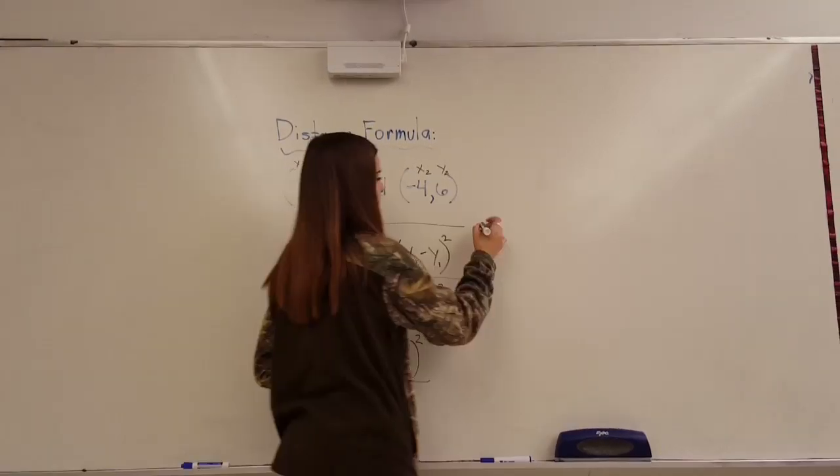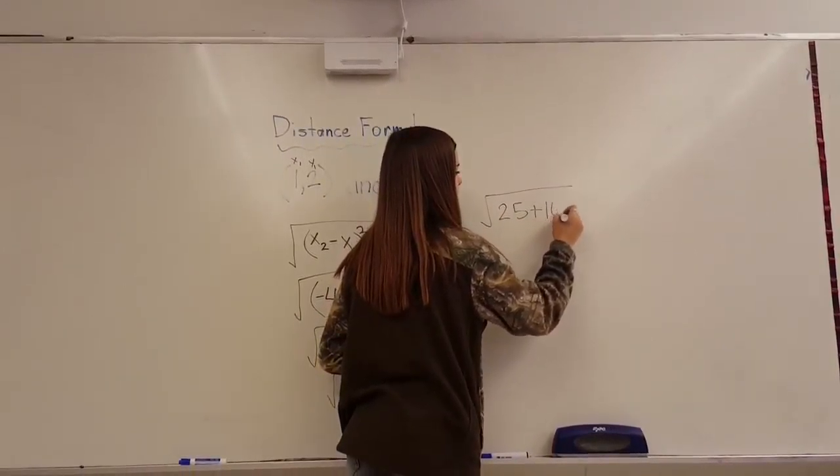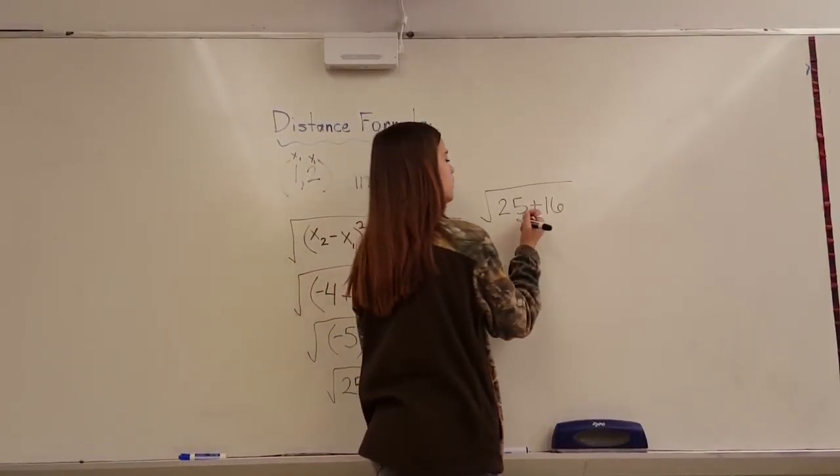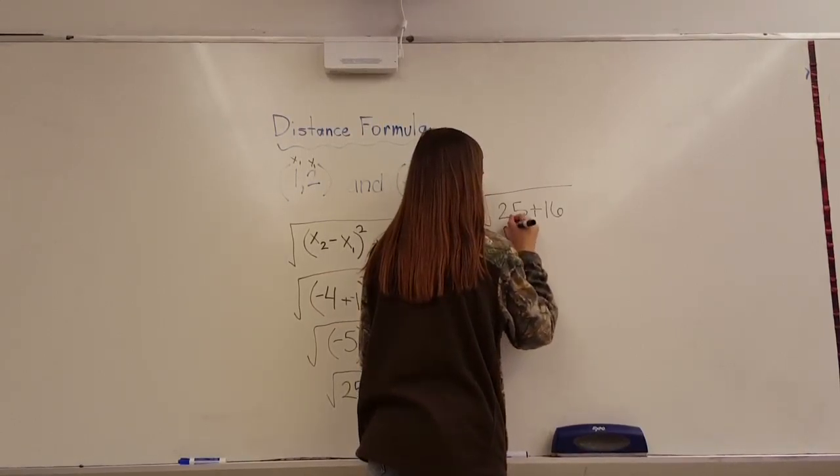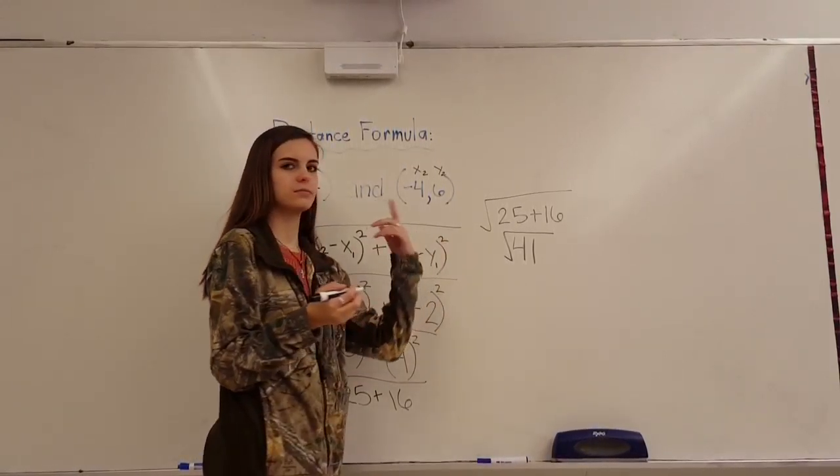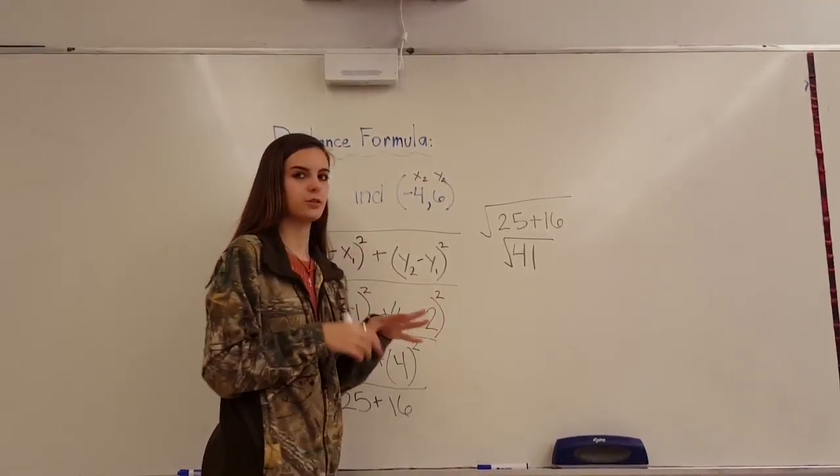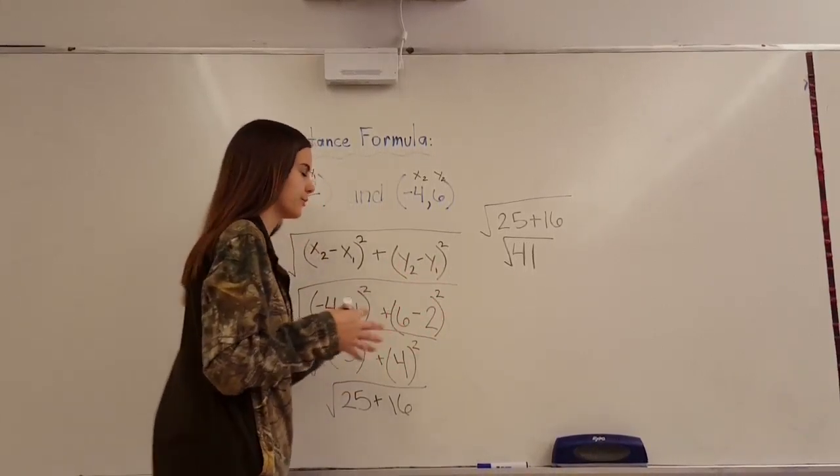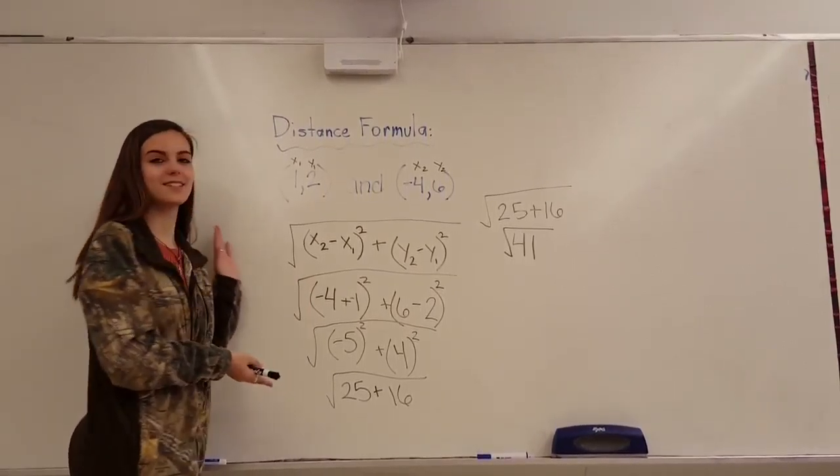So we've come down to this. And we have 25 plus 16. So that comes out to be 41 square root. And you can always figure that out, see what the actual square root is. But most of the time, your teacher will just let you keep it as square root of 41. Because it isn't a negative square root. So that will be your answer. And that is distance for you.